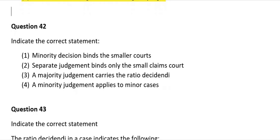Question 42: Indicate the correct statement. 1) A minority decision binds the smaller courts; 2) A separate judgment binds only the small claims courts; 3) A majority judgment carries the ratio decidendi; 4) A minority judgment applies to minor cases. The correct answer is number 3: a majority judgment carries the ratio decidendi.